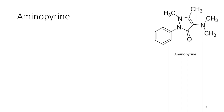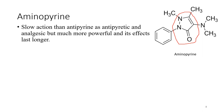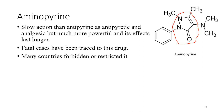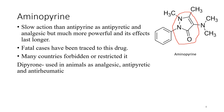Aminopyrene: from this basic structure, different substitutions produce derivatives with analgesic and antipyretic effects. It is slower acting than antipyrene as an antipyretic and analgesic, but much more powerful, and its side effects last longer. Fatal cases have been traced to this drug, and many countries have forbidden or restricted it. Because of these fatal cases it is no longer being used, so the chemistry, SAR, and synthesis have not been explained in detail.